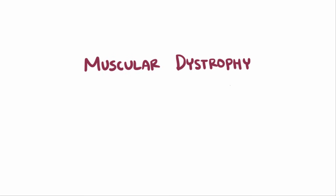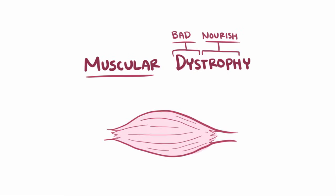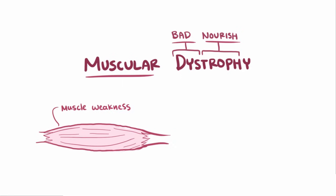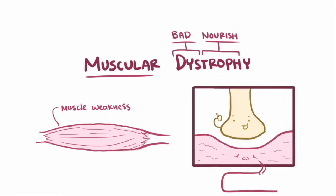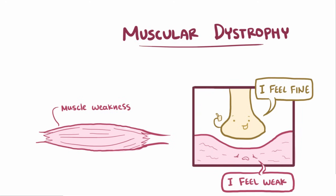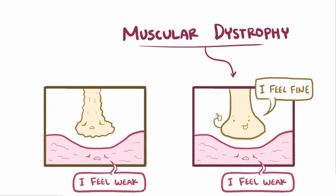With muscular dystrophy, 'dys' means bad or difficult, and 'trof' means nourish. So muscular dystrophy basically refers to the muscle appearing poorly nourished because of degeneration, which leads to muscle weakness. Under a microscope, a biopsy of tissue shows changes in the muscle itself, but not in the nerve or neuromuscular junction, and this distinguishes muscular dystrophy from other problems that cause muscle weakness as a result of nerve damage, like neuropathies.